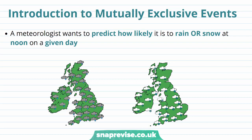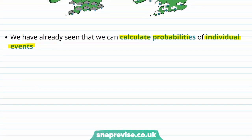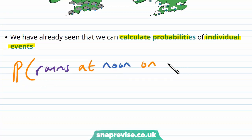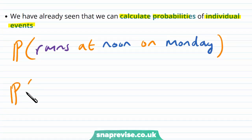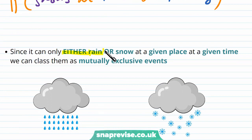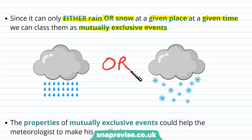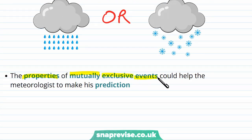So what exactly are Mutually Exclusive Events? Let's say that a meteorologist wants to predict how likely it is to rain or snow at noon on a given day. We have already seen that we can calculate probabilities of individual events. Since it can only either rain or snow at a given place at a given time, we can class them as Mutually Exclusive Events. This is because it can only rain or snow, not both.